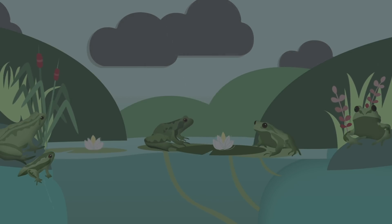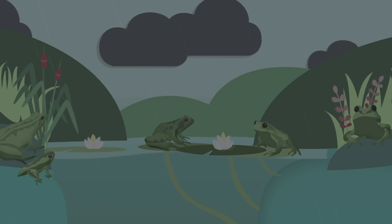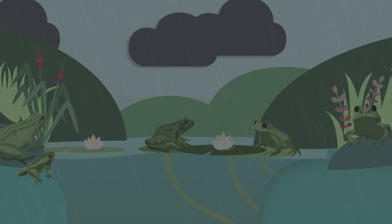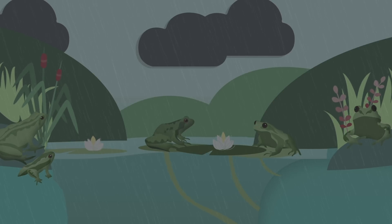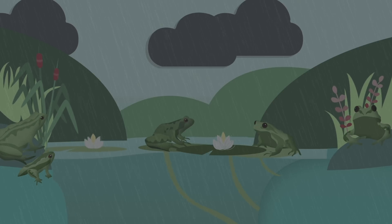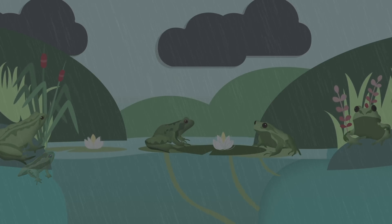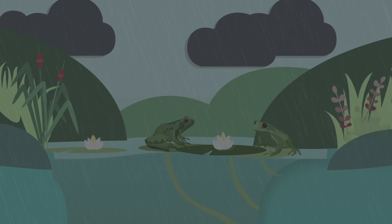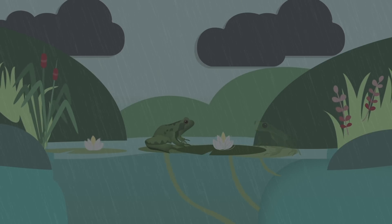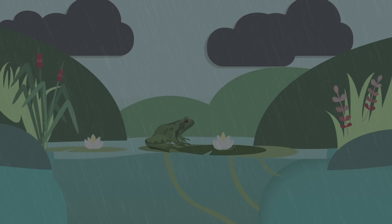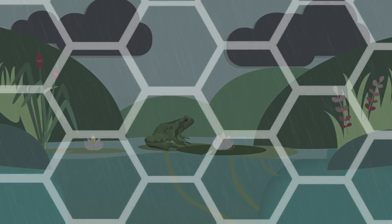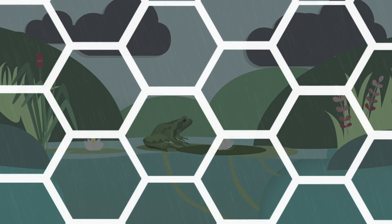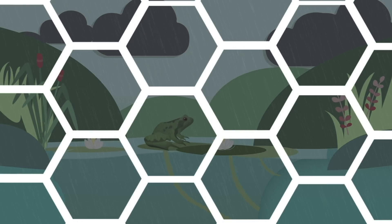Ranavirus disease has been devastating British ponds, even leading to the collapse of entire populations. In ponds that were found to be infected with ranaviruses, frog numbers fell 81% in just over a decade. But what causes ponds to become such a hive of infection?